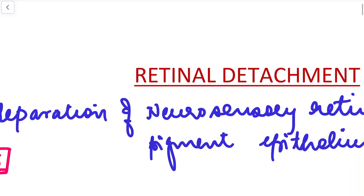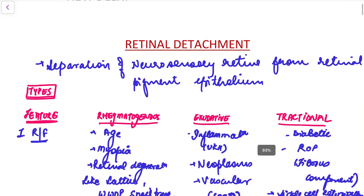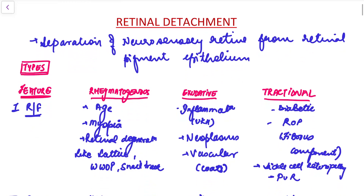First of all, I will be taking up retinal detachment. Retinal detachment is the separation of the neurosensory retina from the retinal pigment epithelium. As I have already told you in one of my previous videos, the first 9 layers of the retina — the outer 9 layers — are constitutively called the neurosensory retina. So if there is separation of the neurosensory retina from the retinal pigment epithelium, that is known as retinal detachment.